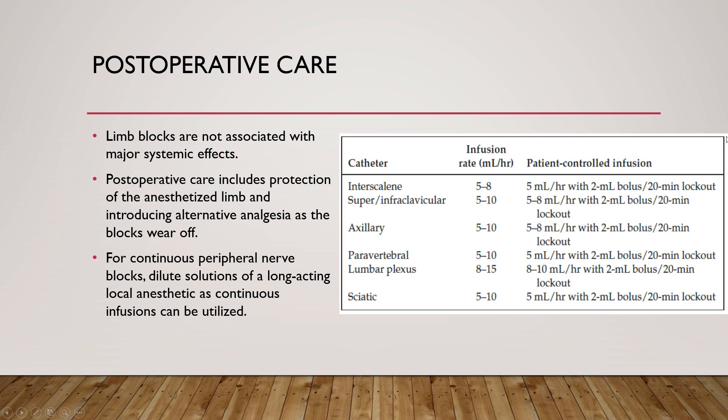Peripheral nerve blocks are not associated with major systemic effects the way general or spinal anesthesia are — their effect is local to the injection site. However, postoperative care differences include protection of the anesthetized limb and introducing alternate analgesia plans such as pain pills or IV pain medicine as the nerve block wears off.